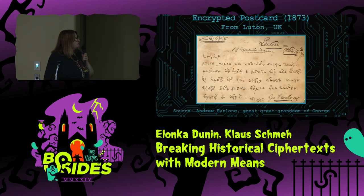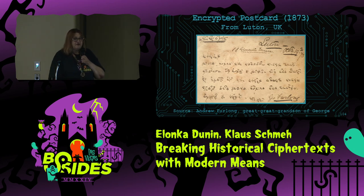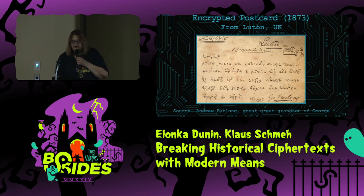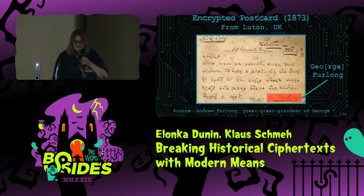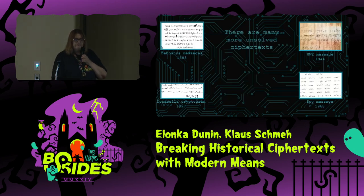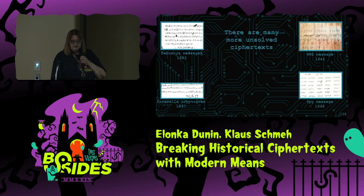We've also been working on an encrypted postcard from 1873. It was sent to us by a man who found it in his family documents — from his great-great-grandfather, George Furlong, owner of a football club in Luton. It was a postcard he sent to his sister. We figure it can't be that difficult, and there are underlined portions. But it's something we've never been able to solve. There are many, many more unsolved ciphertexts out there — a lot of computer systems have been applied to these, but they remain unsolved. Research is ongoing.